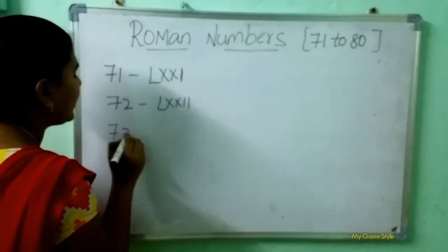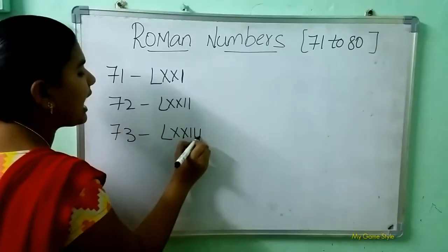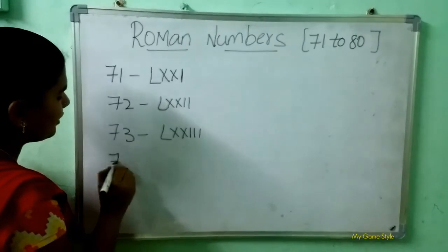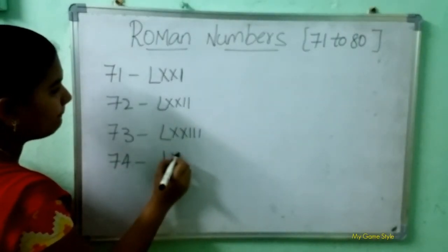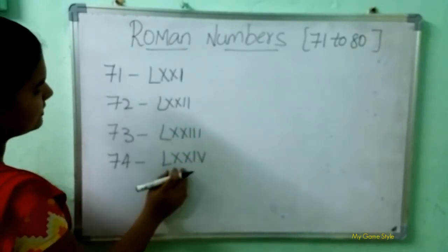73: L, double X, triple I. This is 73. 74: L, double X, I, V. This is 74.